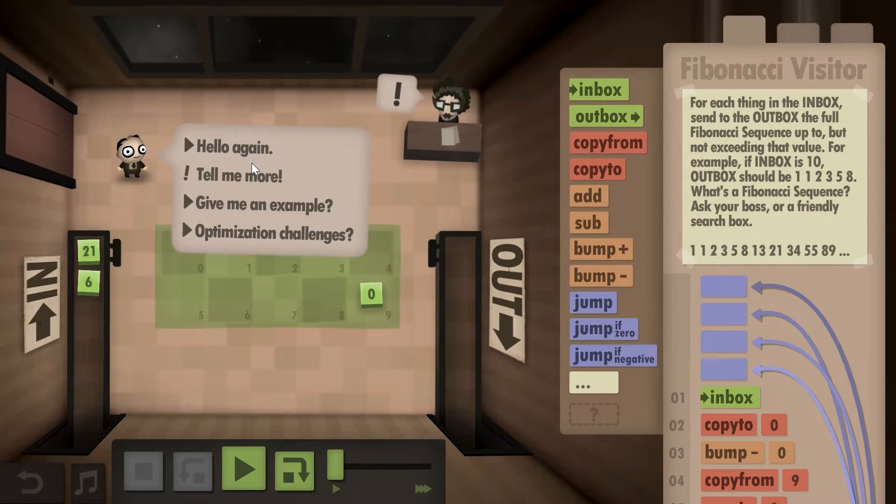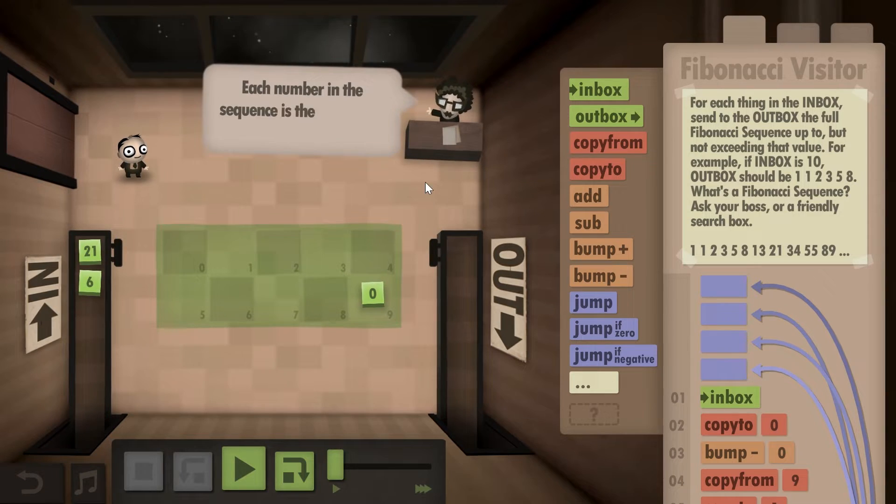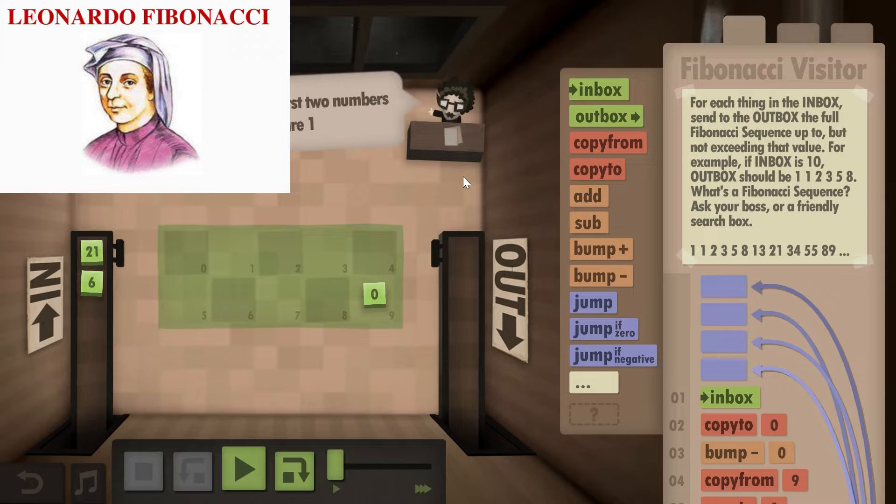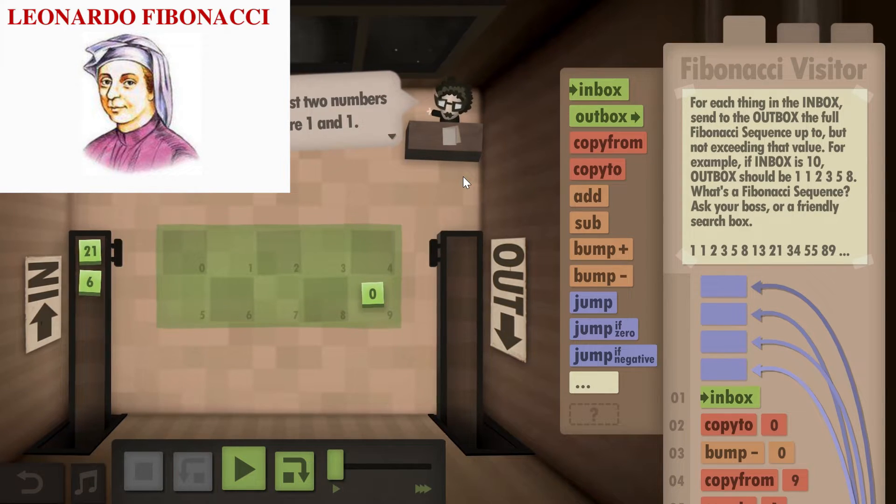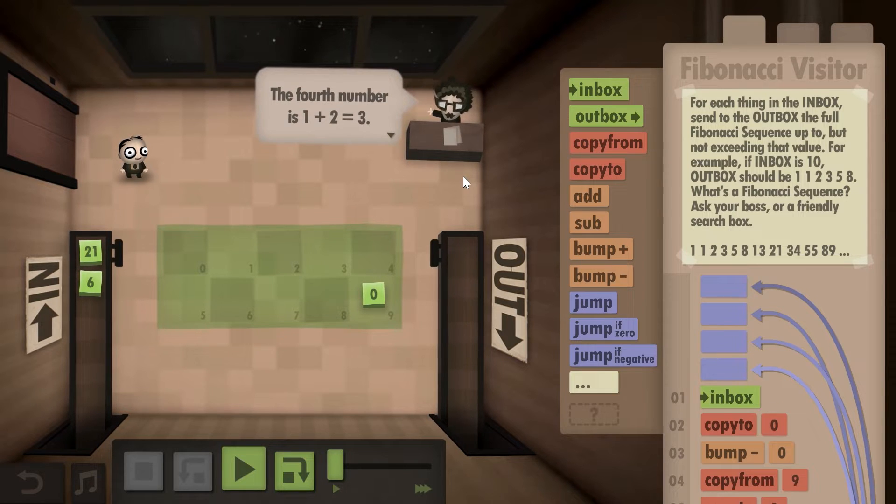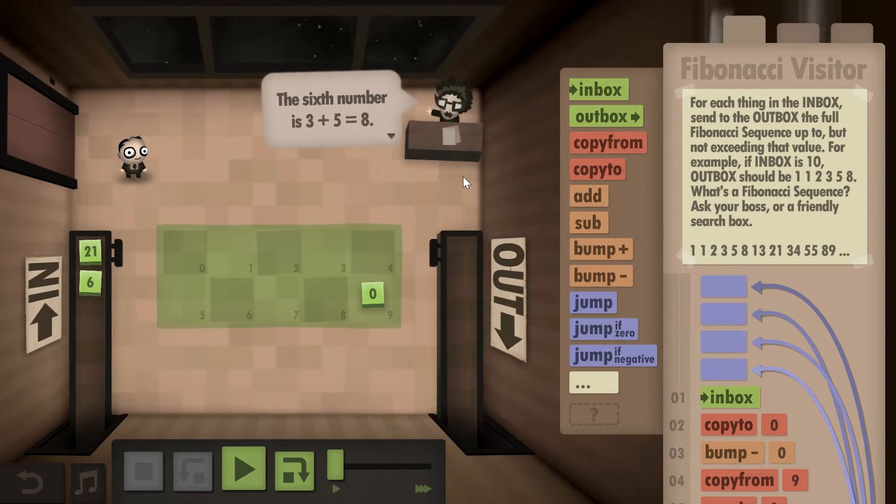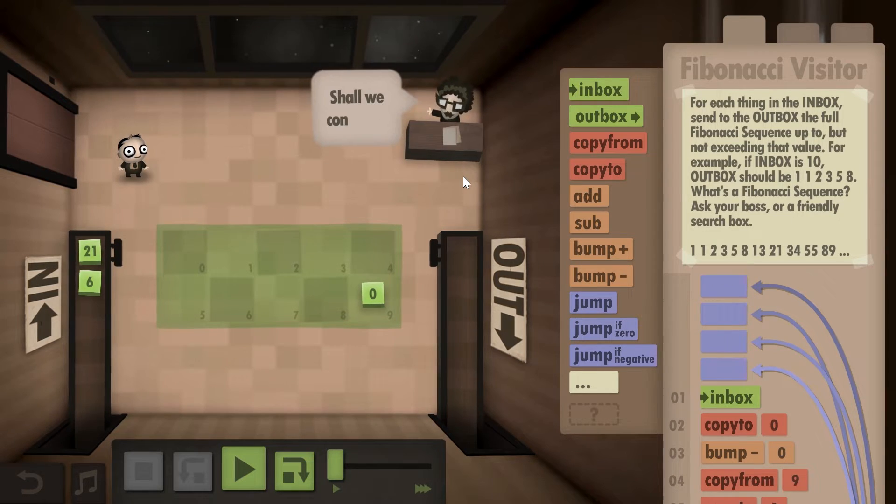It's called Fibonacci Visitor and it's named after Fibonacci, the Italian mathematician from the 11th and 12th century. This mission is pretty simple—you have two numbers, you take a number, break it down into Fibonacci numbers and put them into the output. When there's nothing left, you go to the next number.